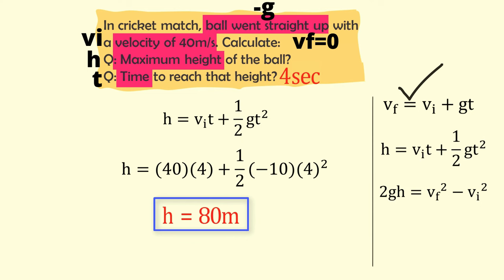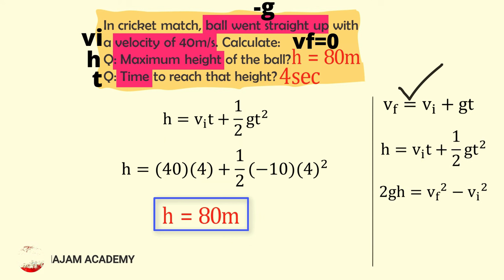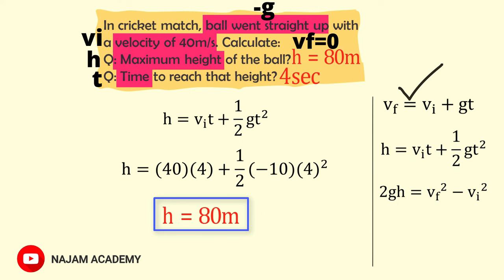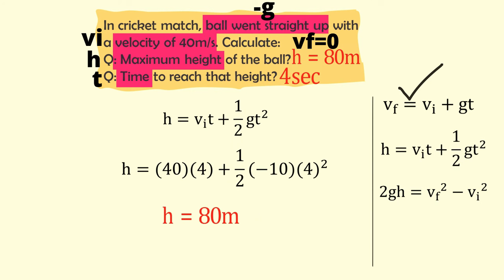So the ball gains a maximum height of 80 meters in 4 seconds with an initial velocity of 40 meters per second. This was all about how to solve any physics problem easily. If you learned something new, please like this video and share it with your friends. Thank you for watching.